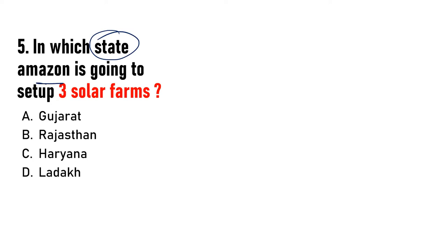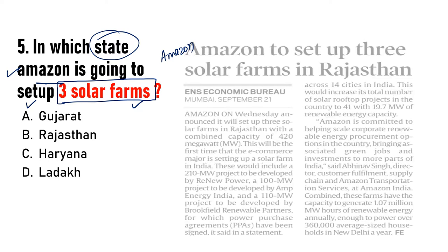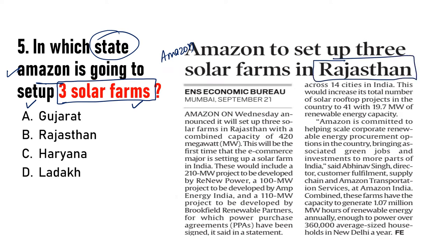Next question: kis state mein Amazon ab teen solar farms setup karega? Amazon company Rajasthan mein teen solar farms setup kar rahi hai. Total capacity hogi 420 megawatt. Yeh pehli baar ho raha hai ki koi e-commerce major company solar farms India mein open karegi.